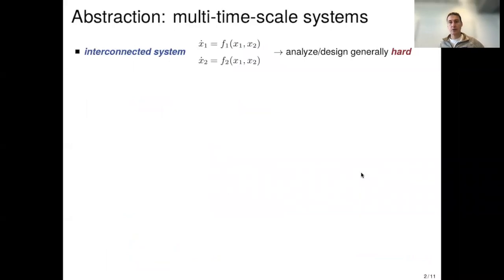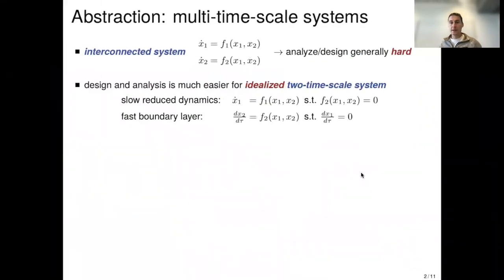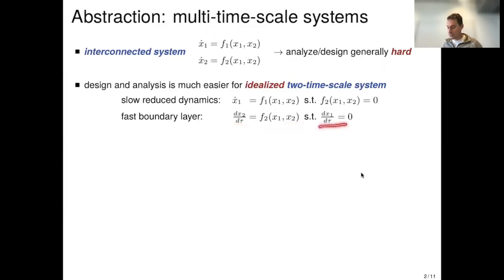Let's abstract the situation a little and go to multi-timescale systems. General interconnected systems x1-dot equals f1, x2-dot equals f2 are hard to analyze and design unless you impose more structure. The design and analysis is much easier provided there is a timescale separation, which is a trick we use in engineering and algorithm design all the time. If the second system is much faster — in fact infinitely faster — running on a different timescale tau, the dynamics of the first system are frozen on that fast timescale.